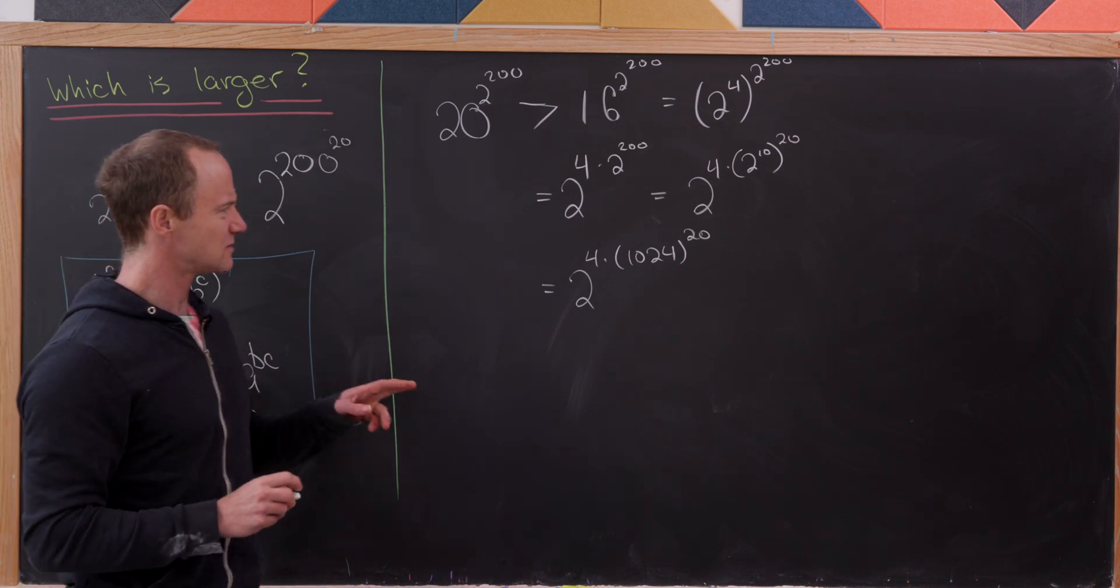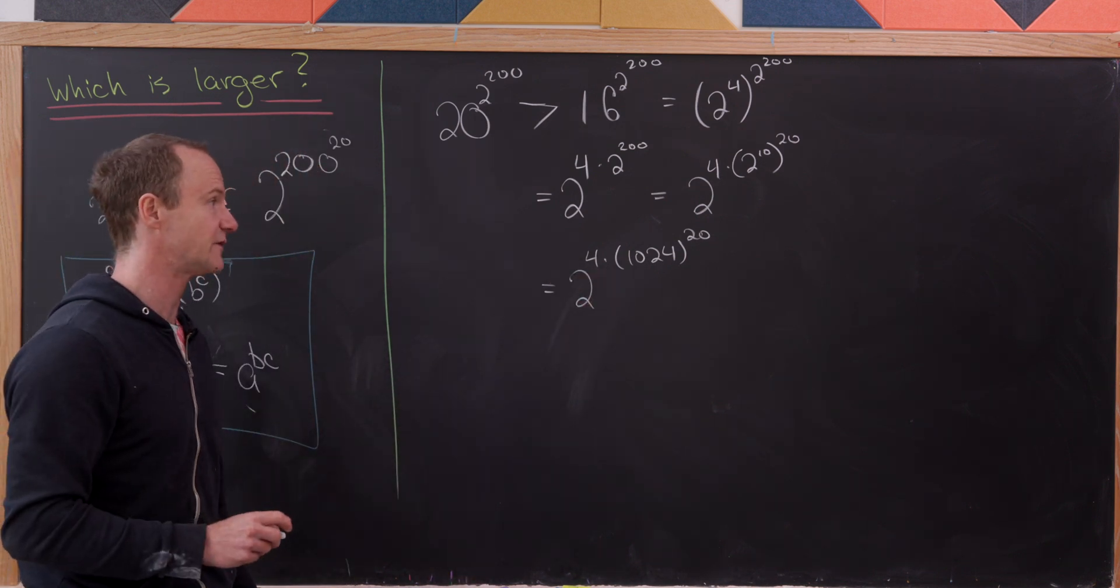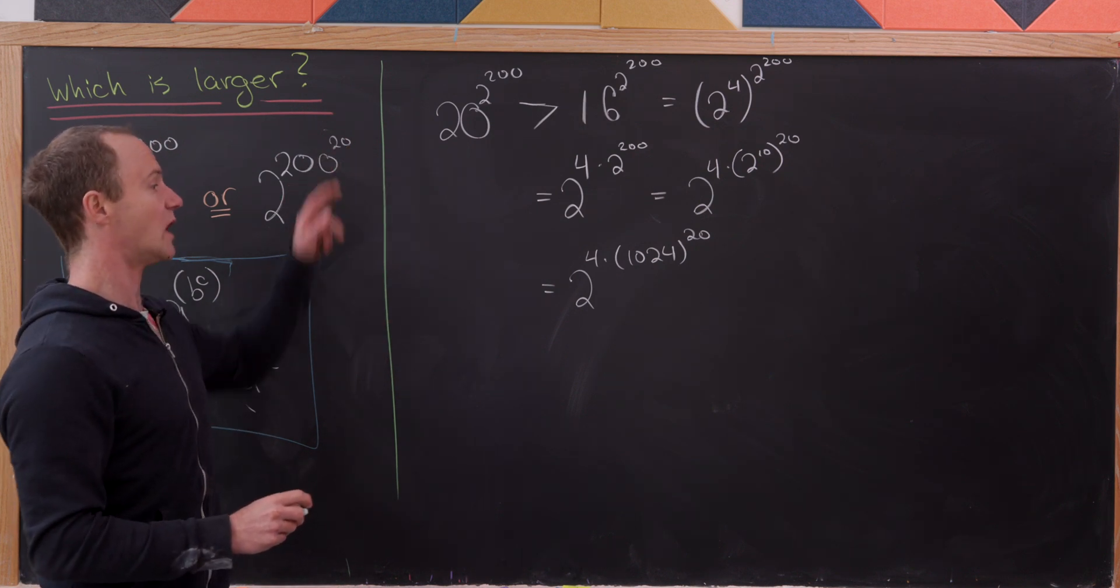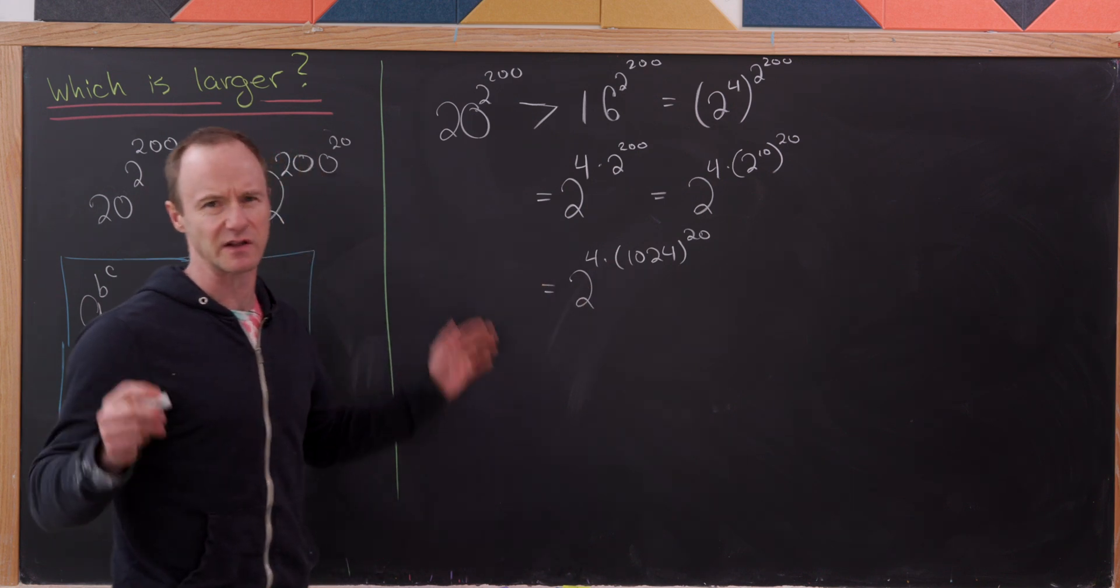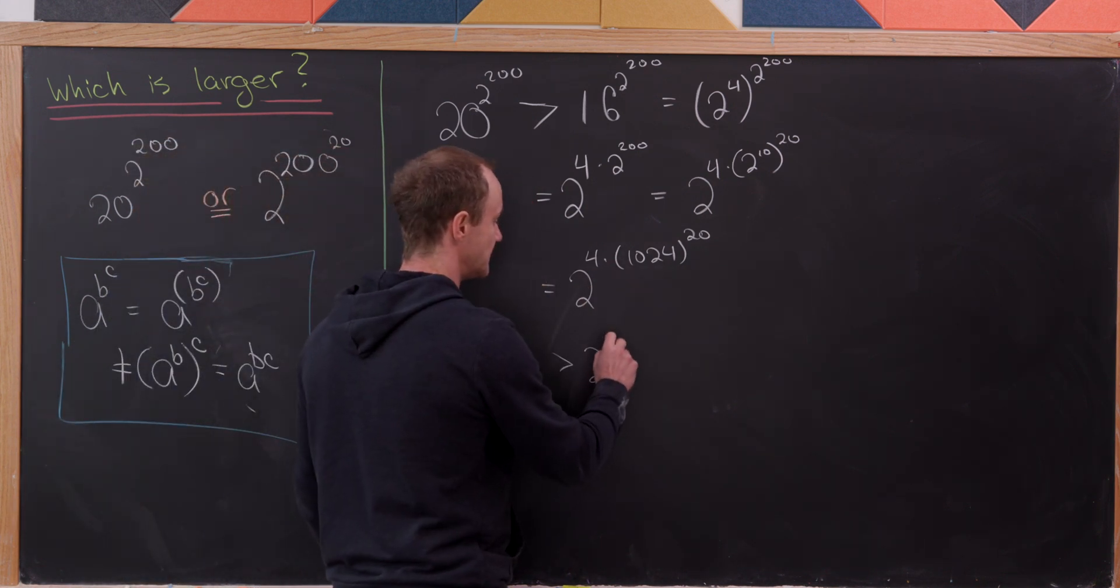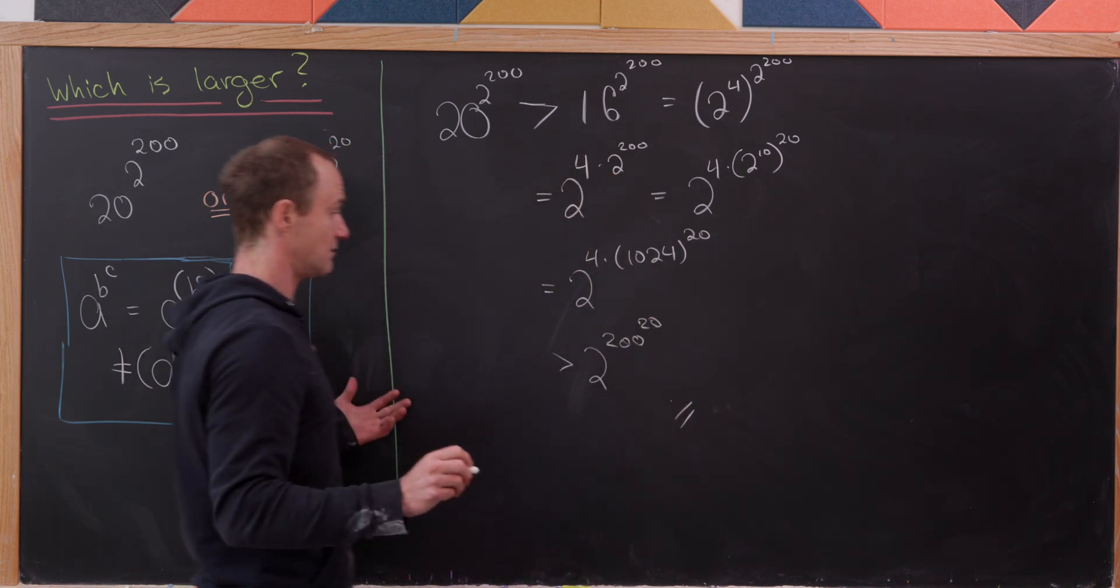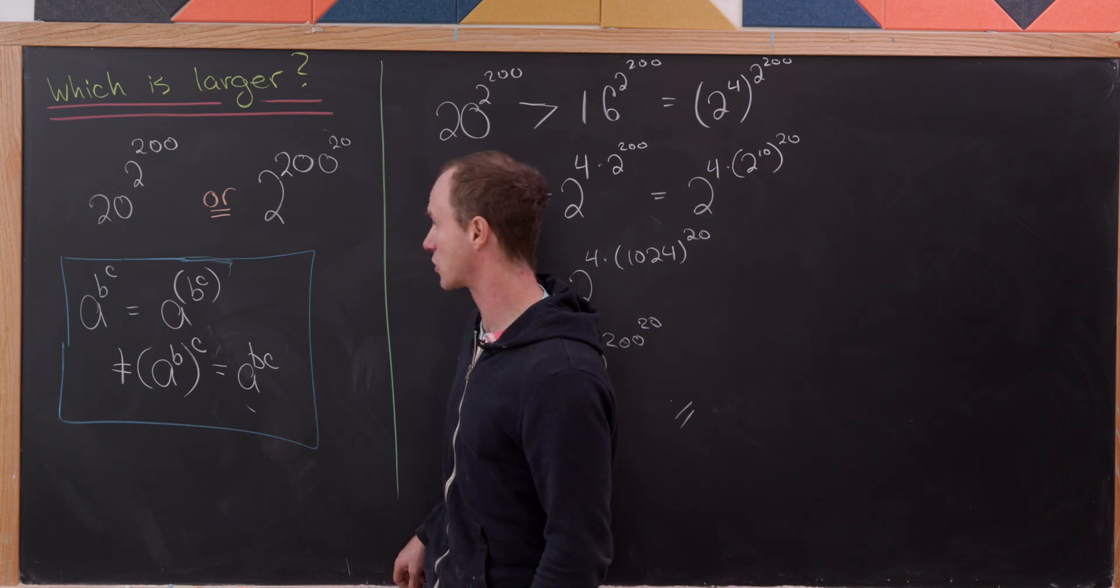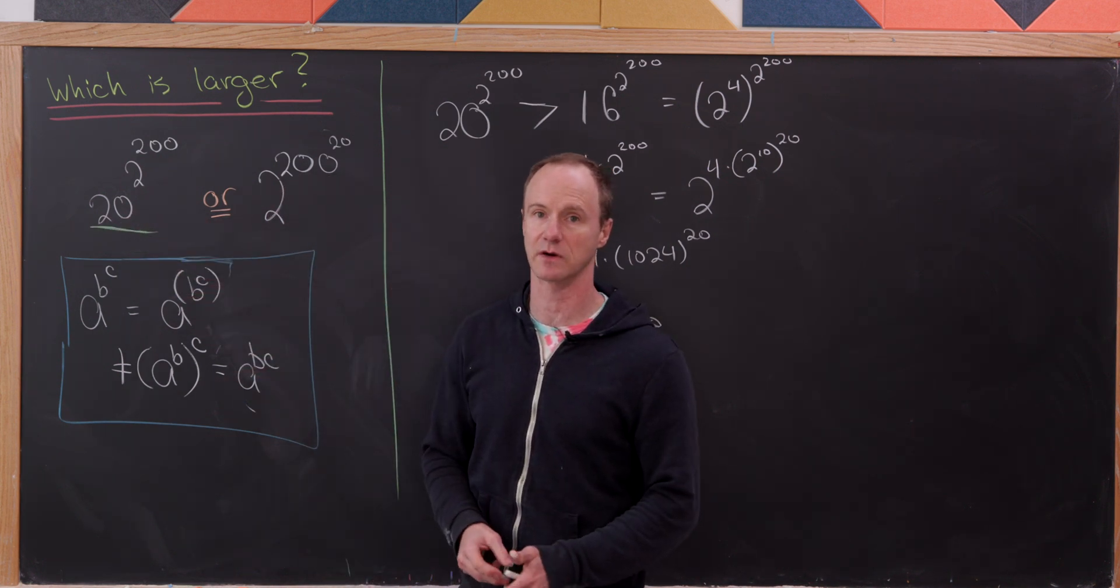But now let's observe that this 4 times 1,024 raised to the 20 is most definitely bigger than 200 raised to the 20. I think that's pretty clear. We don't really need to talk about that. So this whole thing is bigger than 2 to the power 200 raised to the 20. But that does it. That shows us that, yes, our guess was correct. And this one on the left was, in fact, the larger number.